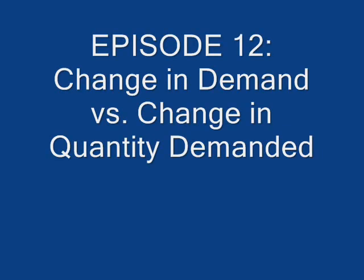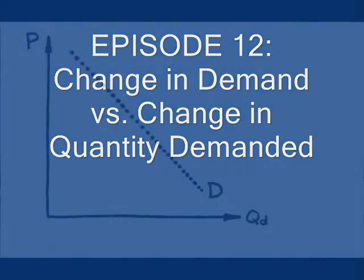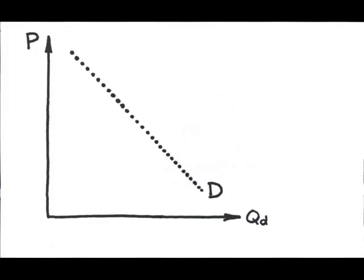Now we know, demand is just a collection of price-quantity demanded combinations showing, all else constant, that price and quantity demanded are inversely related. What happens to demand if price goes up? Nothing.